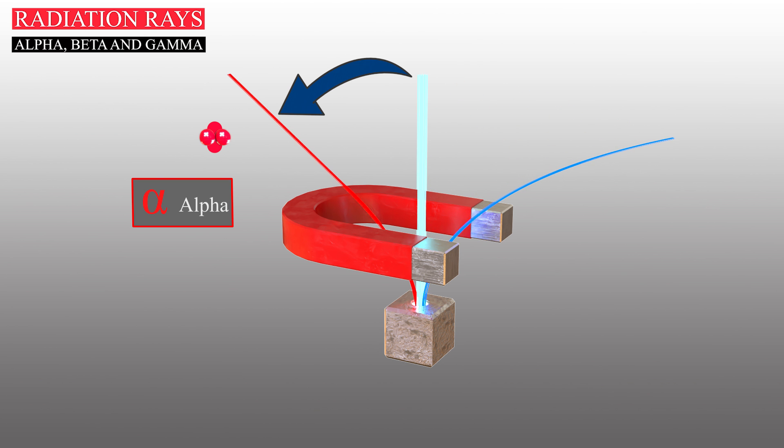Beta rays are a stream of negatively charged electrons. After passing through the magnet, they bend in the opposite direction of the alpha ray. Because the electrons of the beta ray have less mass than the protons and neutrons in the alpha ray, the beta ray undergoes a more pronounced bend.